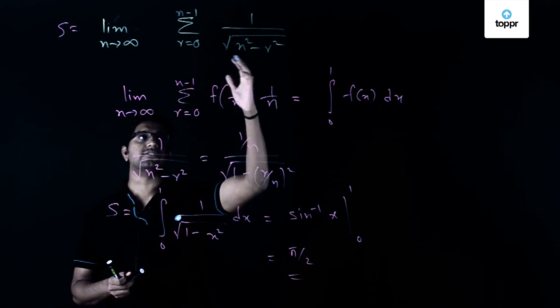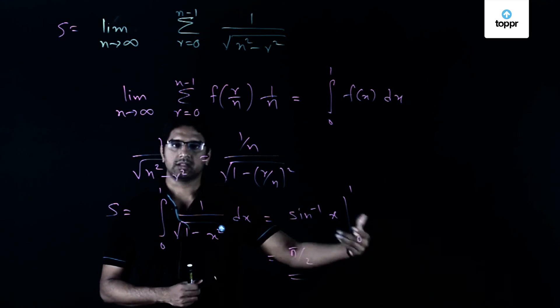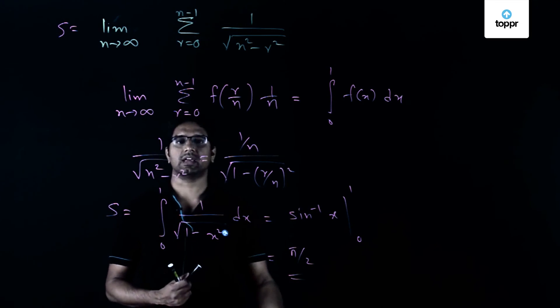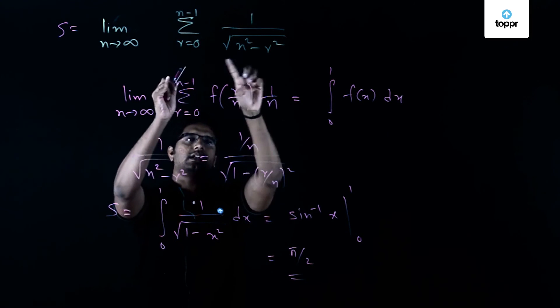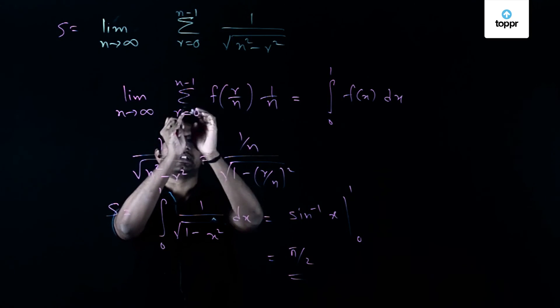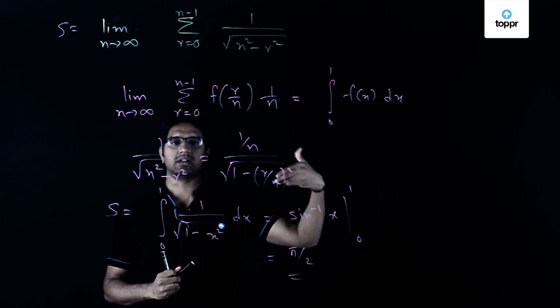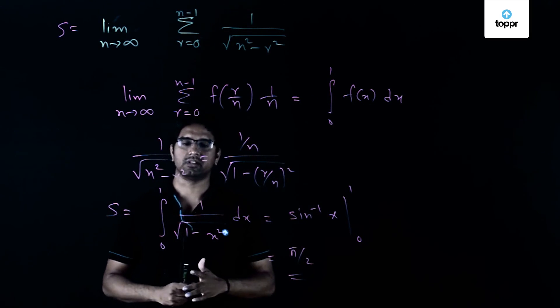Whenever such kind of infinite series are given, first thing would be a problem involving infinite GP. If that is not the case, try to convert it into a form so that it is equivalent to this infinite series, and you can directly write it as an integral where the lower limit is 0 and the upper limit is 1.